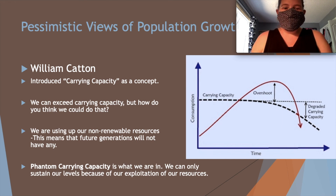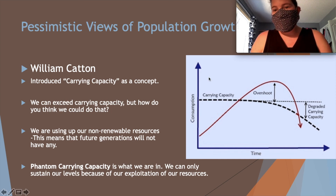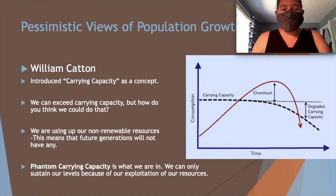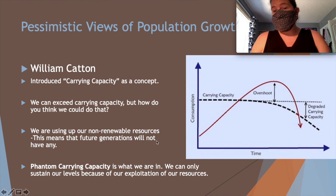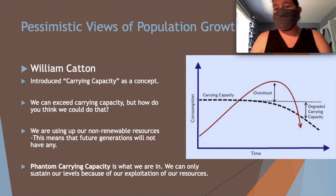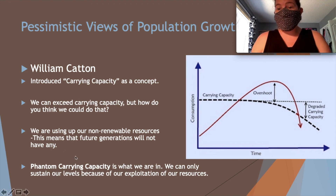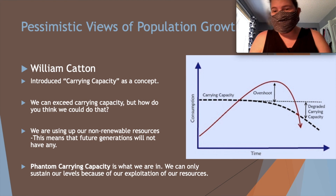William Catton introduced carrying capacity as a concept. Carrying capacity refers to how much of a population an environment can support — once it hits carrying capacity, it won't support any more. Technically, we are way beyond our carrying capacity at the moment, which is not a good thing. We are using up our non-renewable resources, meaning future generations will not have any. The 'phantom carrying capacity' concept suggests we are already beyond anything we can survive.